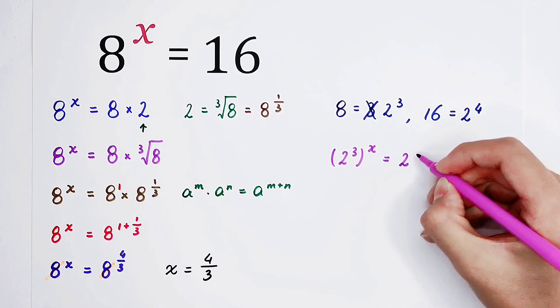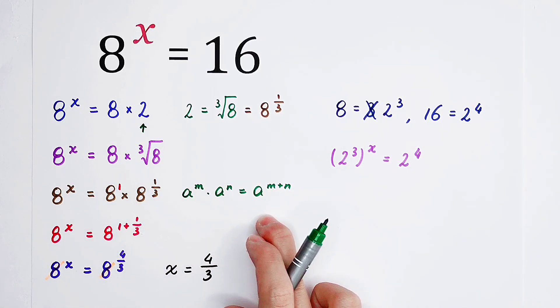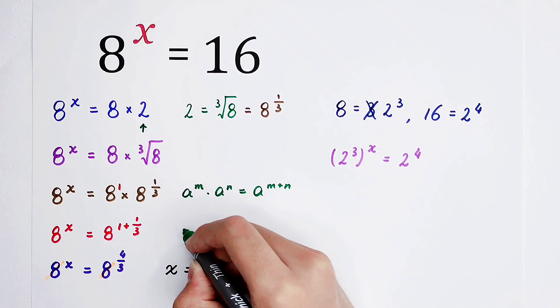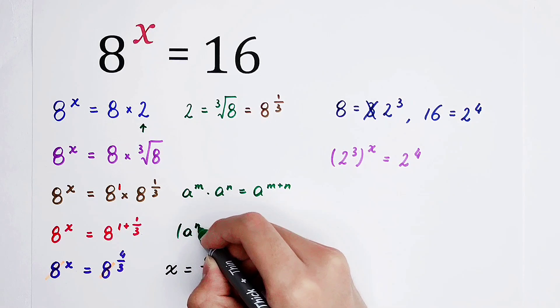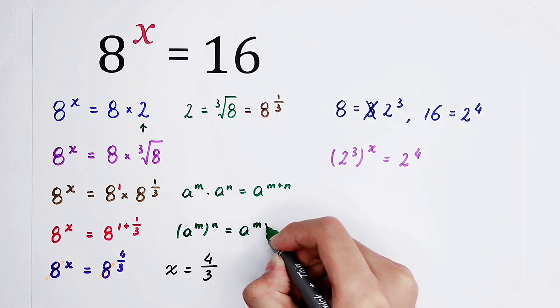Besides this formula, I have another formula. That is, A to the power of M, all to the power of N, is equal to A to the power of M times N.